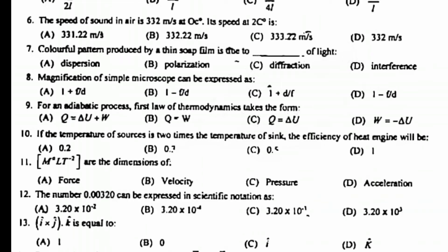The speed of sound in air is 332 meter per second. Colorful pattern produced by a thin soap film in the presence of light is interference of light. Magnification of simple microscope can be expressed as 1 plus D over F.